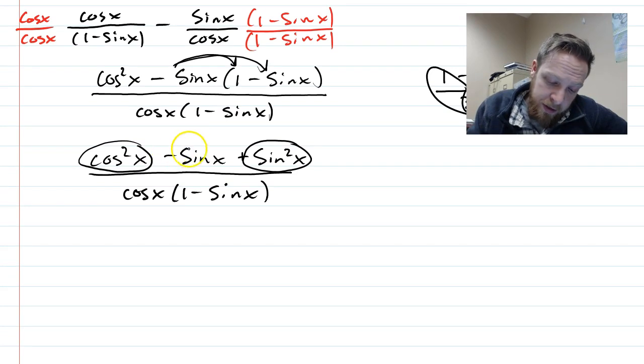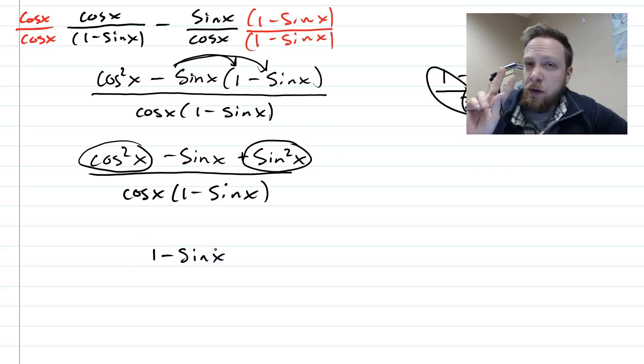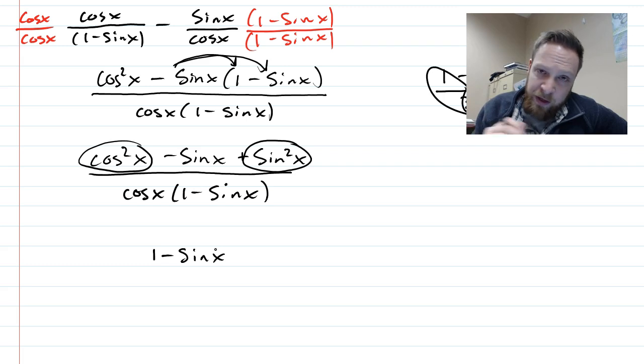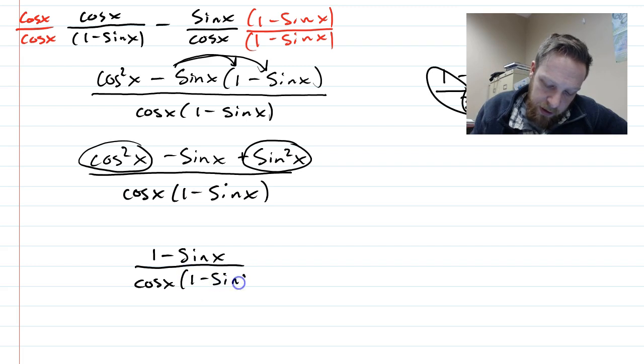So I could write minus sine x plus one, or I could write one minus sine x, and just rearrange the order, because it doesn't matter if you're adding a one, if you put it in front or behind. All right, and then cosine x, one minus sine x.